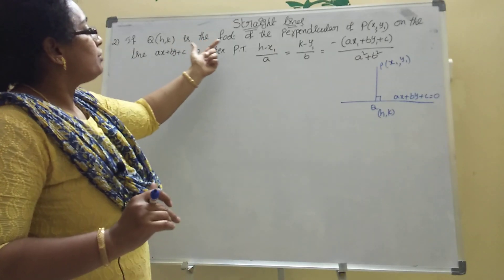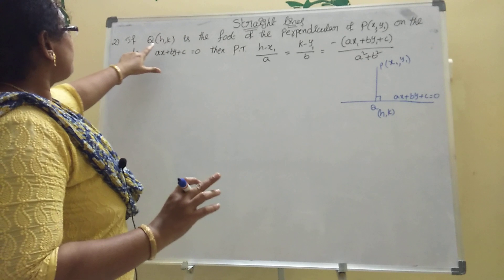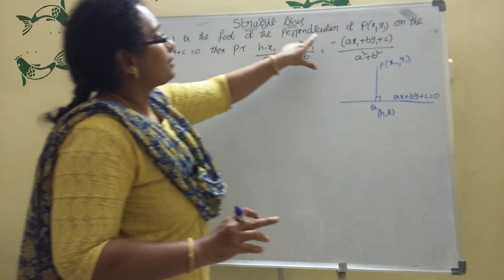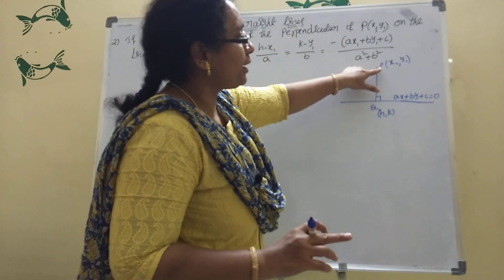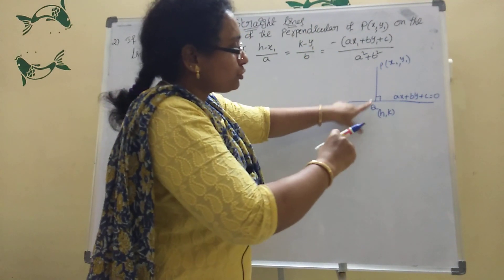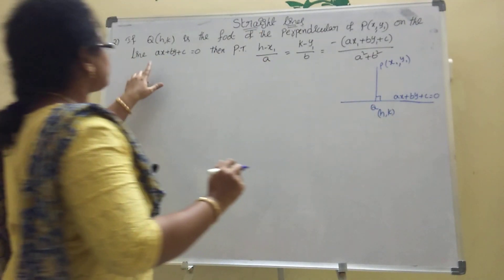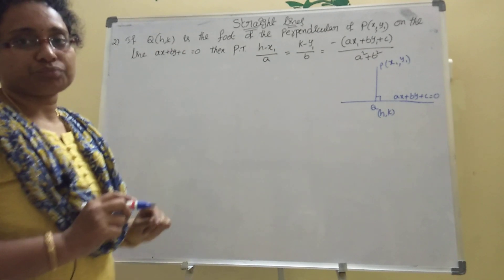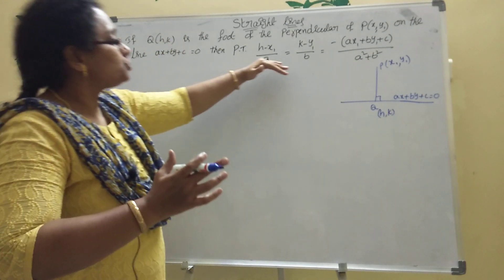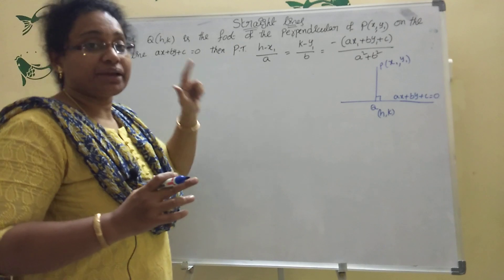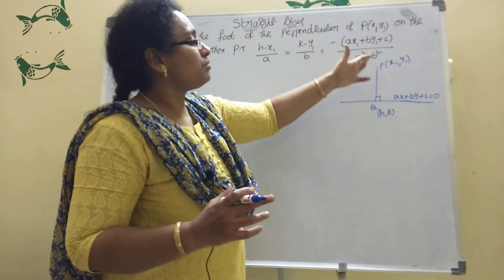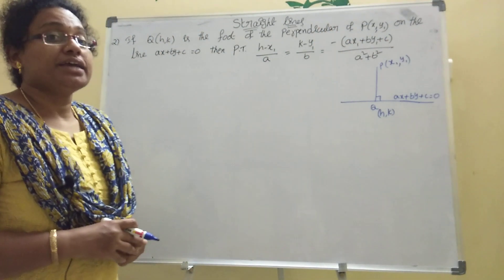Coming to the point — today, given Q of (h, k), we should find the foot of the perpendicular. Q is (h, k), and P of (x₁, y₁) is the given point from which the perpendicular is drawn to the line ax + by + c = 0. We need to prove that (h − x₁)/a = (k − y₁)/b = −(ax₁ + by₁ + c)/(a² + b²).